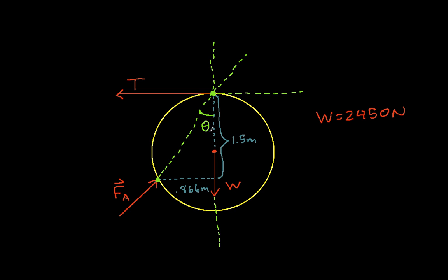Using trigonometry, we have a triangle. We want the angle theta. We know the opposite side and the adjacent side, and so we can say that theta is the inverse tangent of the opposite side, 0.866 meters, over the adjacent side, which is 1.5 meters, which when you work that out turns out to be 30 degrees.